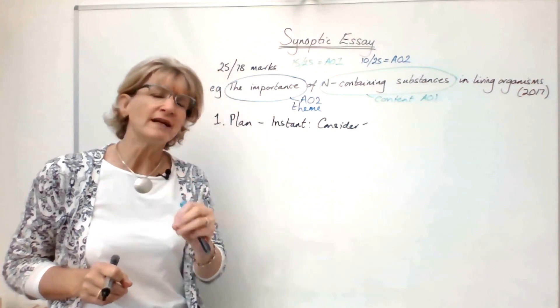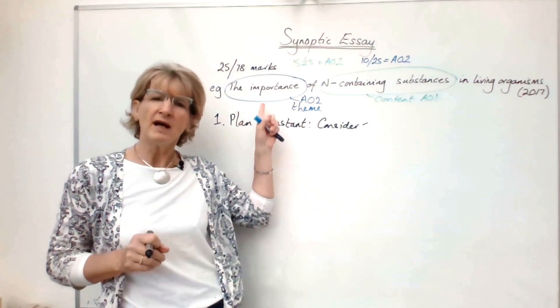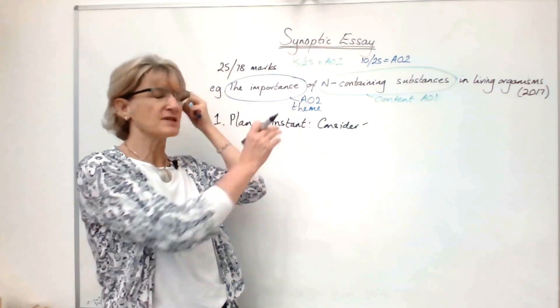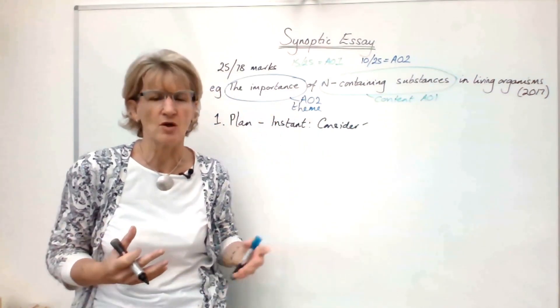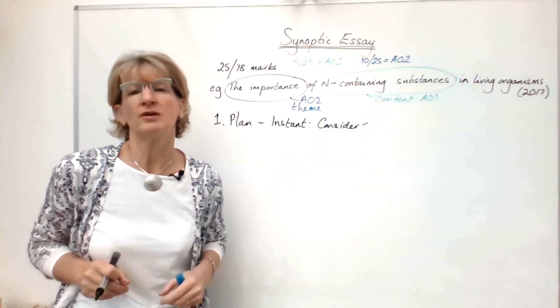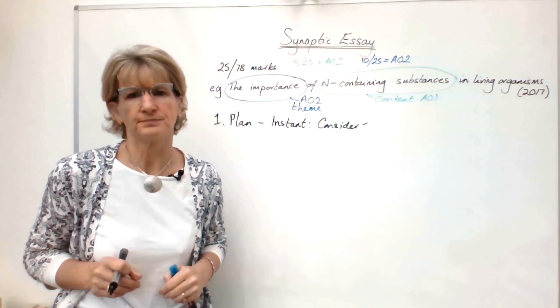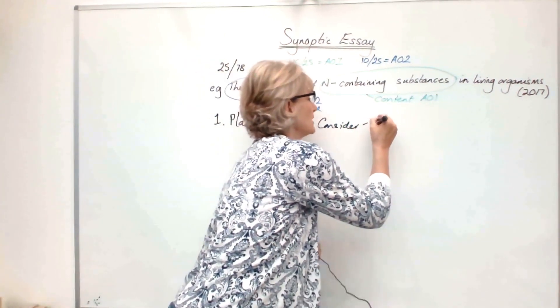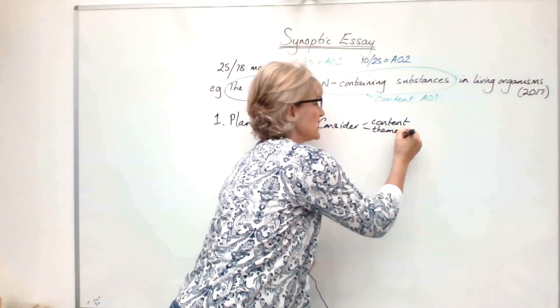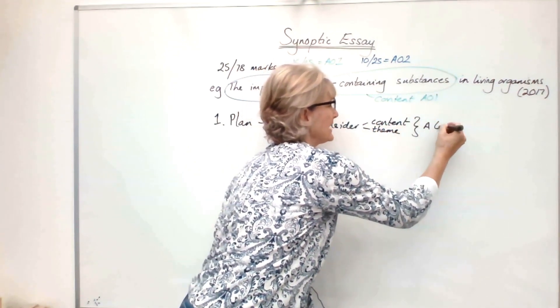For each of those essay titles, you need to consider how much content you know to get the maximum of 15 marks. But also, really importantly, how well do you think you can apply that knowledge, how you can pick out the importance of each of those topics and apply that in the essay. You need to be thinking how you can do these both to A-level standard.